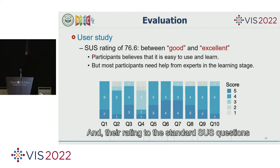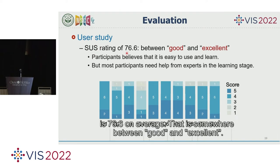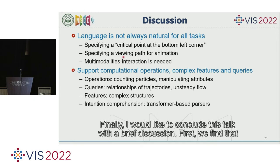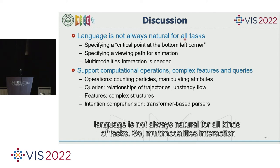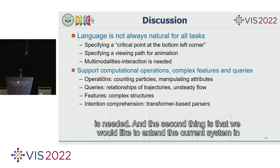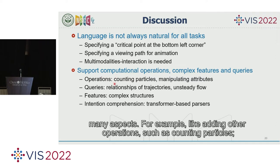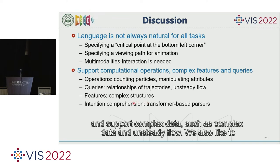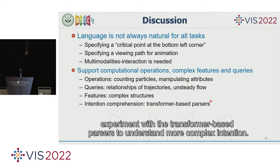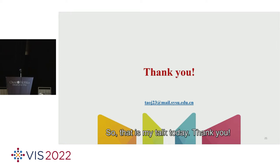In conclusion: first, language is not always natural for all kinds of tasks, so multimodal interaction is needed. Second, we'd like to extend the current system — adding operations such as counting particles, supporting more complex data including complex structures and unsteady flow, and experimenting with transformer-based processing to understand more complex intentions. That's my talk. Thank you.